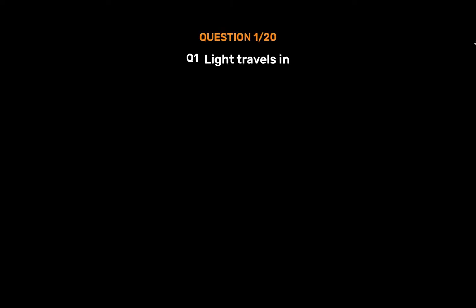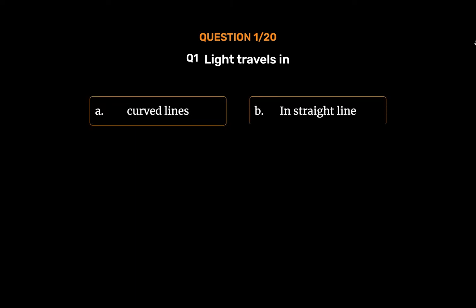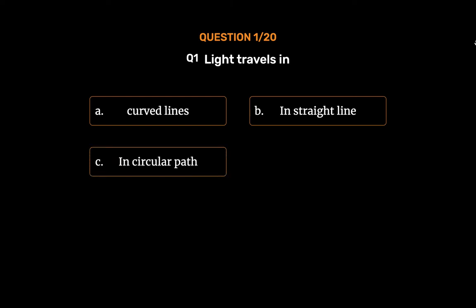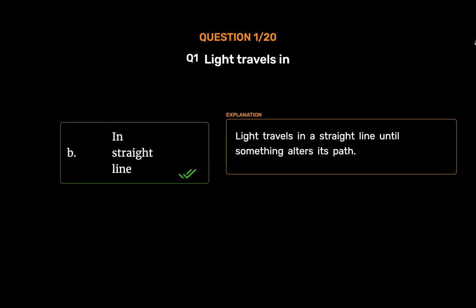Question No. 1: Light travels in — Option A: Curved Lines, Option B: In Straight Line, Option C: In Circular Path, Option D: Zig Zag Path. The correct answer is Option B: In Straight Line. Light travels in a straight line until something alters its path.